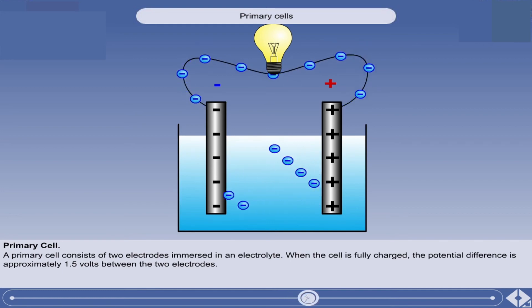At the same time, more electrons are allowed to transfer inside the cell from the positive to the negative electrode.